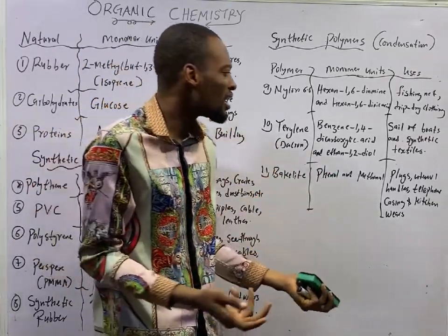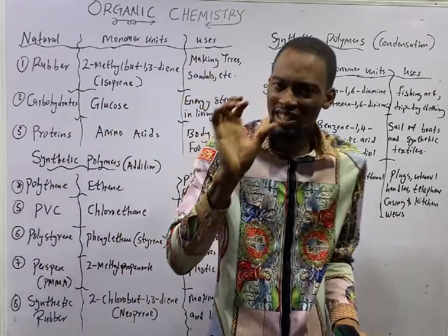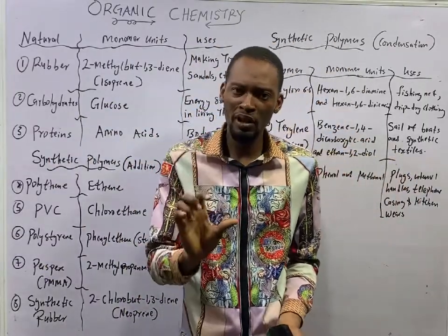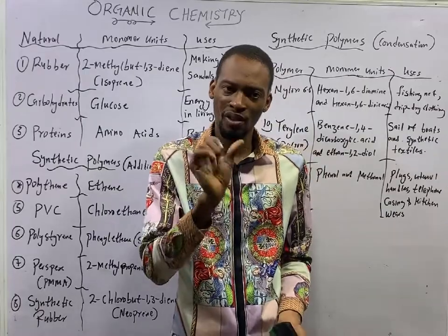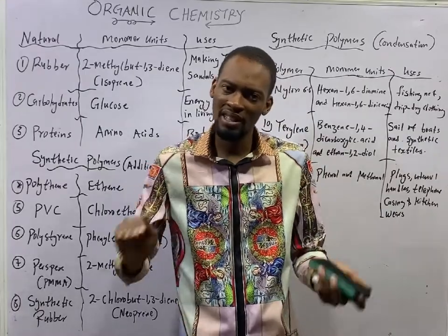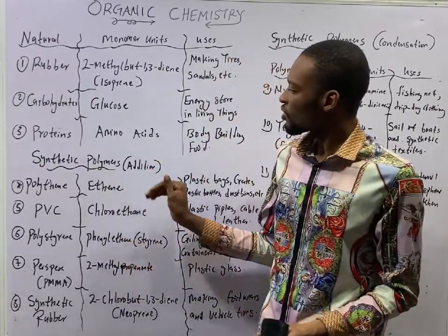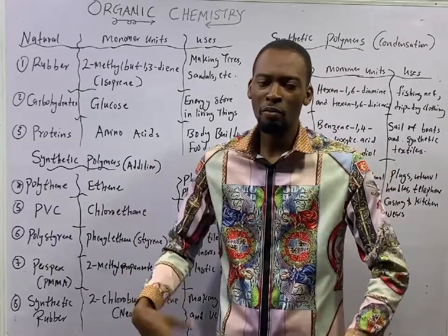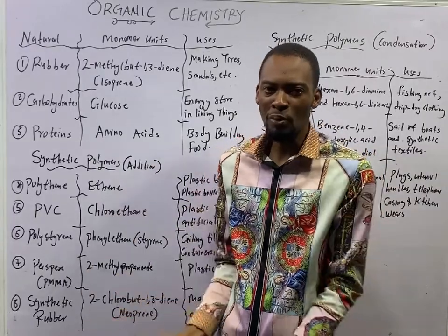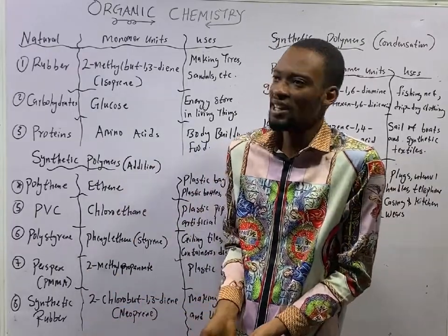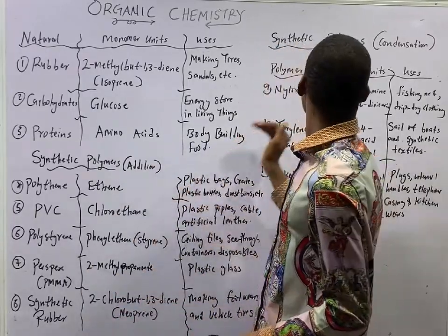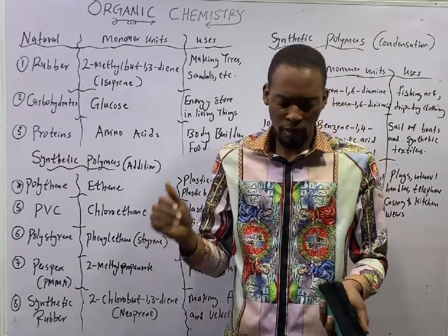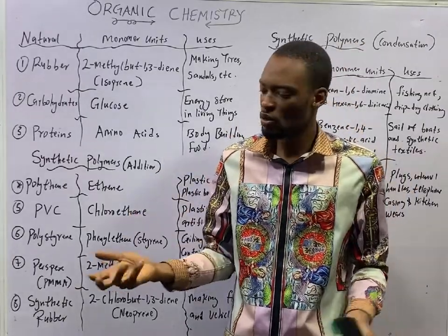Elements are made up of atoms of one type. Meanwhile, compounds are made up of atoms of different types. So, addition polymers are made up of molecules or monomers of the same kind, while condensation polymers are made up of monomers of different types.